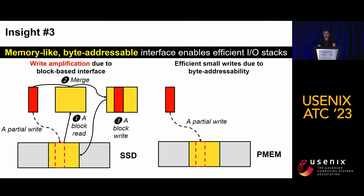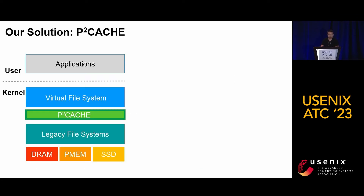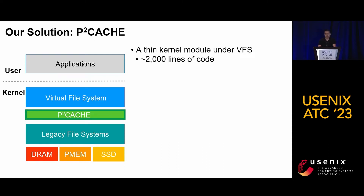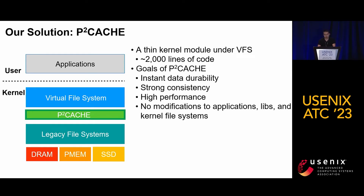Insight number three: PM, or modern NVMe SSD, with the advent of high-speed CPU-to-device interconnect technology like Compute Express Link, provide a memory-like and byte-addressable interface. It offers new design and optimization opportunities to a storage system, such as efficient handling of small writes for file system updates without write amplification. Inspired by these insights, we propose P2Cache, a novel in-kernel caching mechanism. P2Cache is a single kernel module working under Linux virtual file system, consisting of 2,000 lines of code. The goal of P2Cache is to enable key properties of PM-specialized file systems for legacy kernel file systems, including instant data durability, strong consistency, and high performance, while requiring no modification.